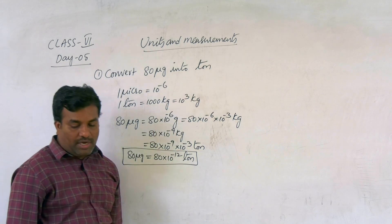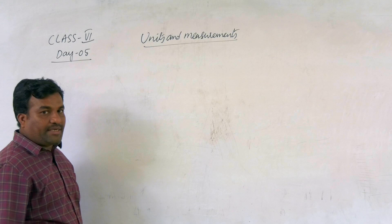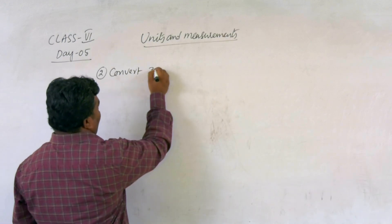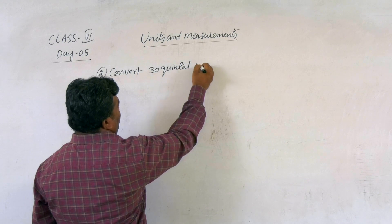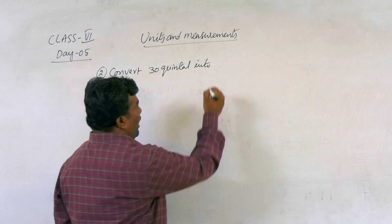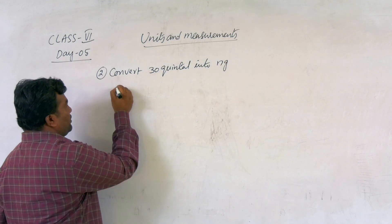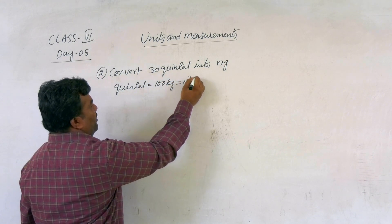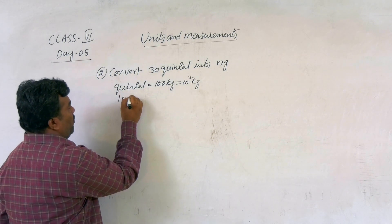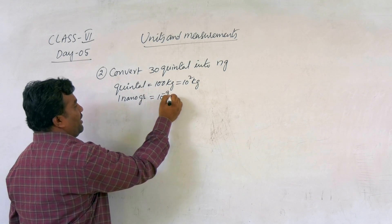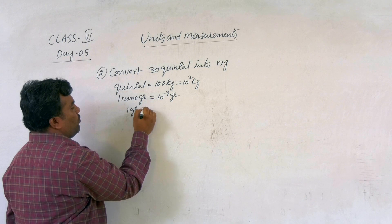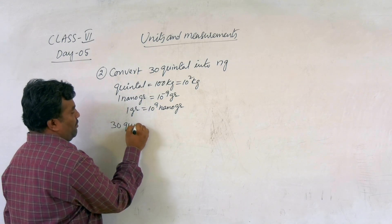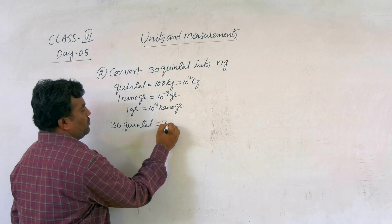Next, second question: convert 30 quintal into nanogram. First, 1 quintal equals 100 kg, which equals 10 squared kg. Next, 1 nanogram equals 10 to the power of minus 9 grams, so 1 gram equals 10 to the power of 9 nanograms.